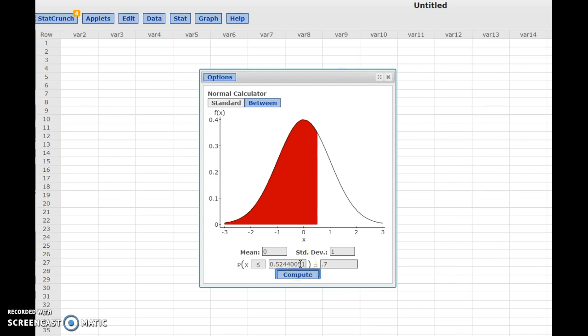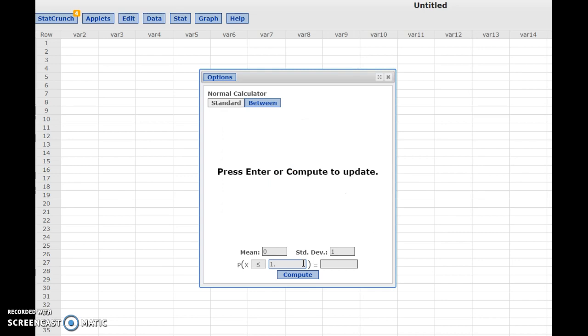Likewise, if I'm given a z-score or a data value and I want to find an area associated with it, I can put the data value and the correct direction here and the program will give me the corresponding area. Let's say that I want to know the area above a z-score of 1.5. In this field I can type my given z-score of 1.5 and here I can set the direction to be greater than to indicate that I want the area above or to the right of 1.5.